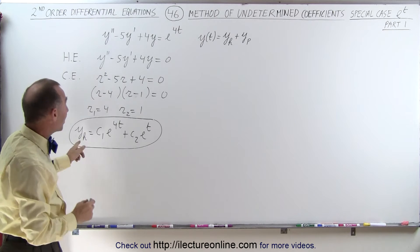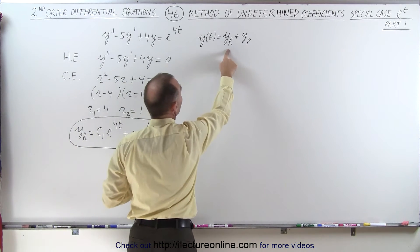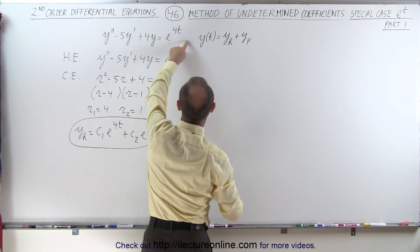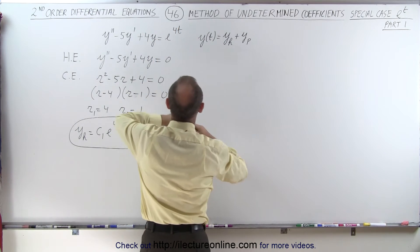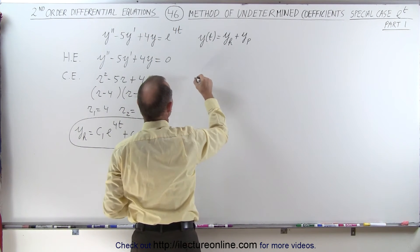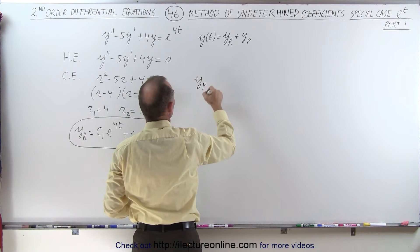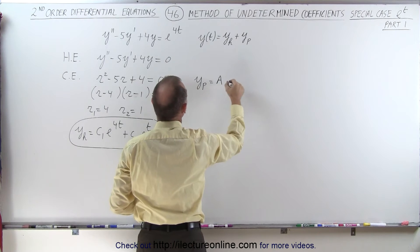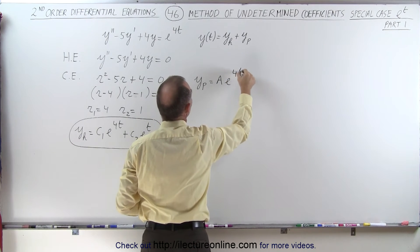So we're going to say, well, we already found the homogeneous part of the solution. Now let's find the particular part of the solution. And since we see an e to the 4t, then we can say the general form of the particular part of the solution is going to be equal to some undetermined coefficient times e to the 4t.